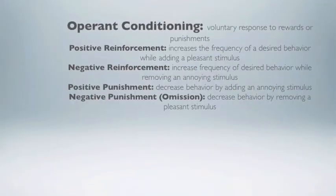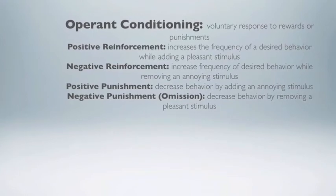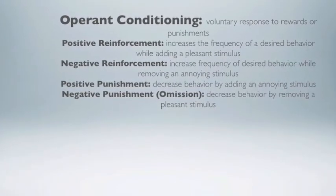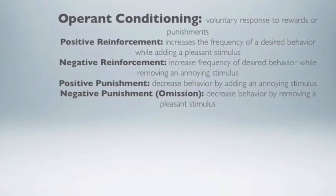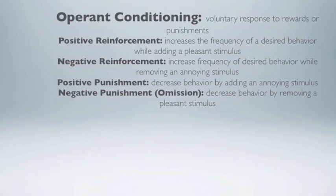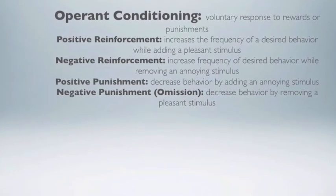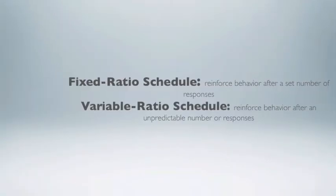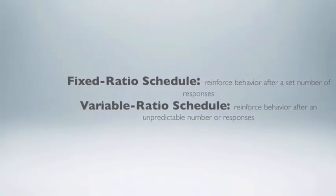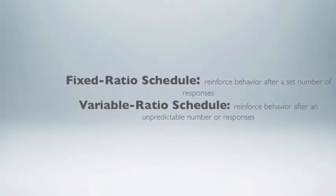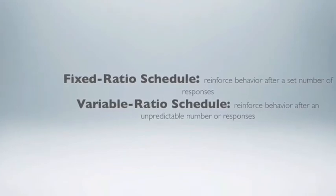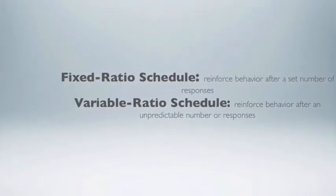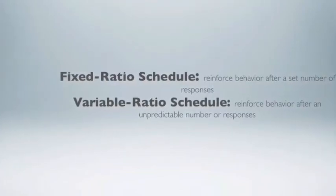Operant conditioning involves voluntary responses to rewards or punishment, such as positive reinforcement, negative reinforcement, and both positive and negative punishment. In a fixed ratio schedule of reinforcement, you know the number of acts you must complete to get a reward. In a variable ratio schedule, you do not know the number of acts you must complete to get a reward.